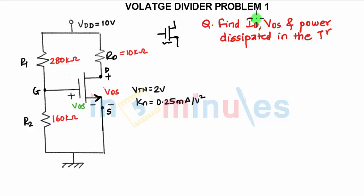Now coming to the question, you need to find ID, VDS, and power dissipated in the transistor. The first step is to find the value of VG, which is R2 upon R1 plus R2 into VDD. So this will give you the value as 3.636 volts.